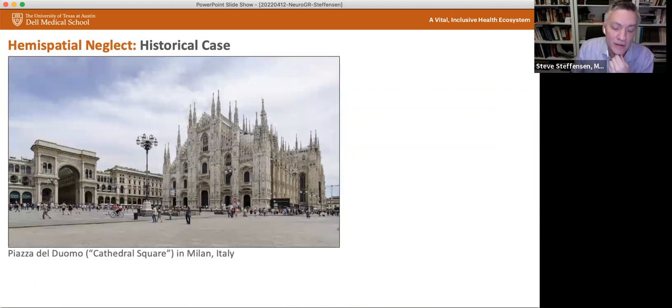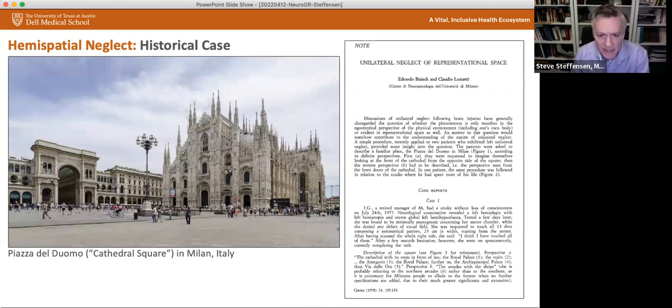And so the researchers said, I want you to imagine that you're standing facing the cathedral. And I want you to, can you picture that in your head? And she said, yes, I can see it very clearly. I've been there hundreds of times. And they said, okay, I want you to describe all of the buildings that you see in your mind. Now, again, she's not physically there. There was no pictures. There was no maps. The researchers did create a map of all of the buildings in the area and said, okay, so you're standing facing the cathedral IG, and we want you to name all of the buildings that you see.